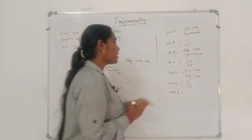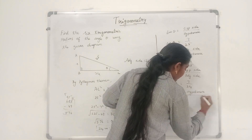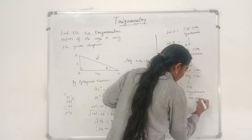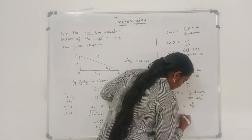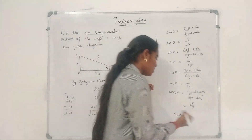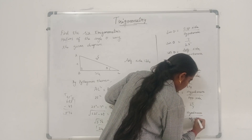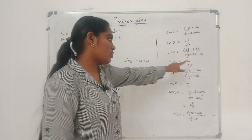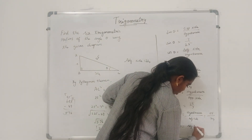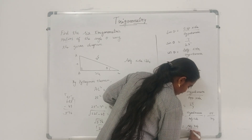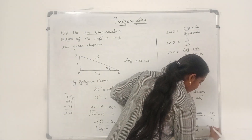Cosecant theta is reciprocal of sine, so it equals hypotenuse by opposite side: 25 by 7. Secant theta is reciprocal of cosine, so it equals hypotenuse by adjacent side: 25 by 24. Cotangent theta is reciprocal of tangent, so it equals adjacent side by opposite side: 24 by 7. These are our six trigonometric ratios.